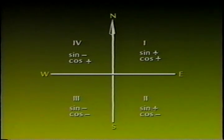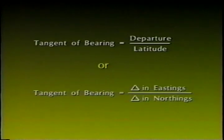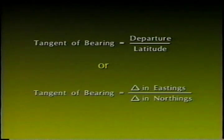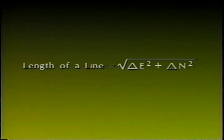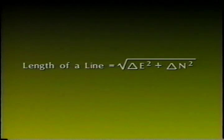It is also necessary to keep track of the algebraic sign of the quadrant the bearing is in. The tangent of the bearing is the departure divided by the latitude, which can also be stated as the tangent of the bearing equals the difference in eastings divided by the difference in northings. The length of a line equals the square root of the difference of the eastings squared plus the difference in the northings squared.